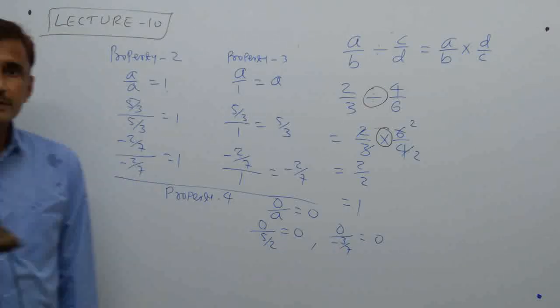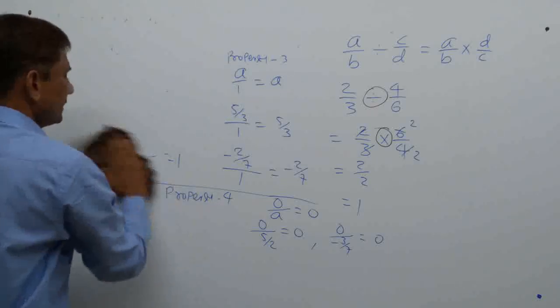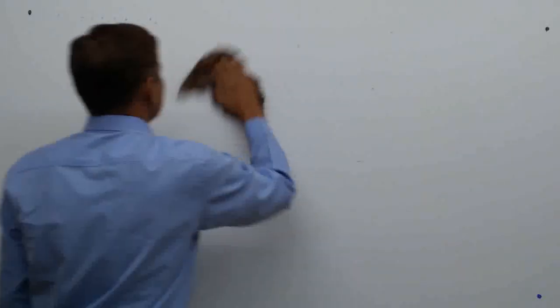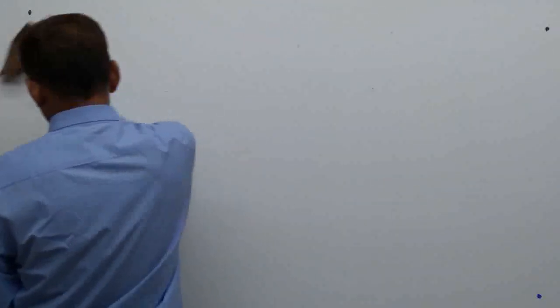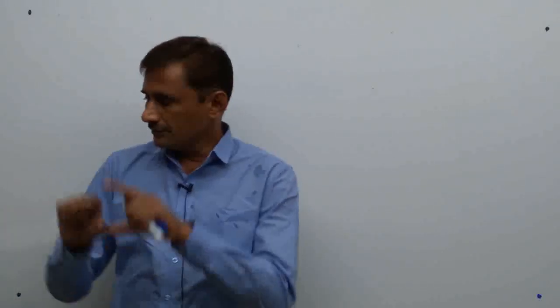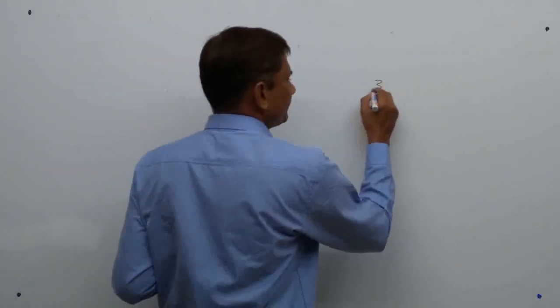Now look at example number 16 on page 19. The question: the sum of 3/5 and 7/15 is divided by their difference — find the quotient. First understand the question: we need to find the sum of the two numbers and their difference, then divide sum by difference.